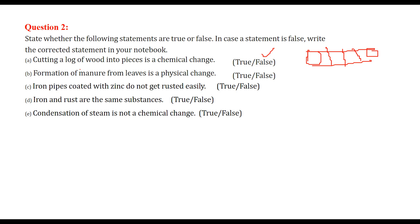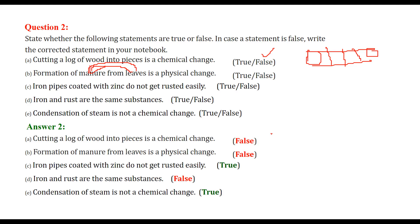Formation of manure from leaves is actually a chemical change, because when bacteria, sunlight, water vapor, etc. work on the leaves, they become manure. There is a proper chemical change - you cannot make leaves from manure. It is irreversible, so this statement is false.